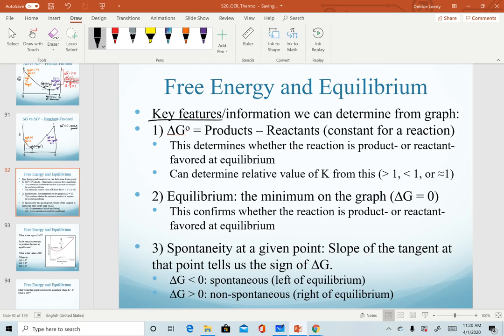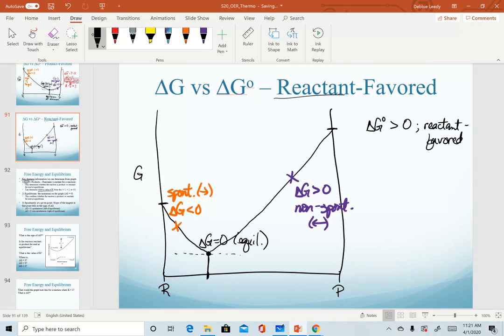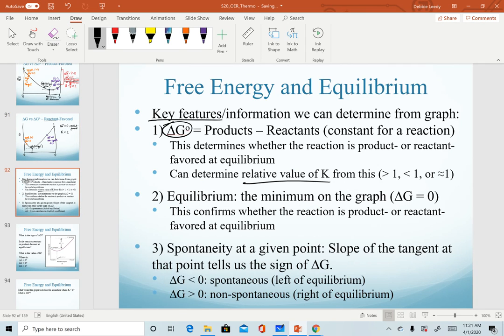So a quick summary of the key features we can determine from these types of graphs. We can calculate or determine the sign of delta G°, looking at products minus reactants, literally on the y-axis. And then we can determine the relative value of K from those. For any reactant favored system, reactants are favored, they're in the denominator, so we get a K value that's less than 1. The second key feature is that we can determine where equilibrium will lie. That will always be the minimum on the graph where non-standard delta G equals zero. And then spontaneity at any given point. Spontaneity is using non-standard delta G values. So we look at the slope of the tangent at any given point. Negative tells us it's spontaneous. Positive means it's non-spontaneous. And that will always be left or right of equilibrium.